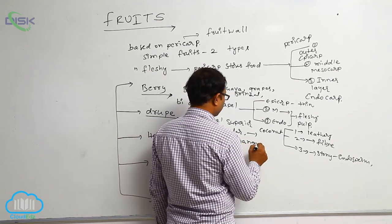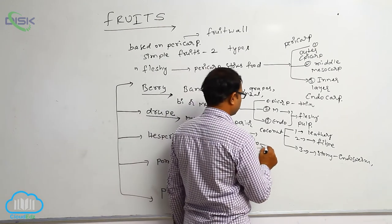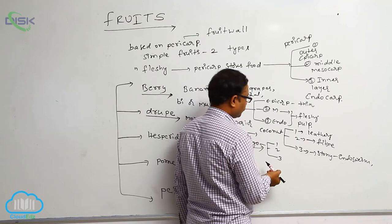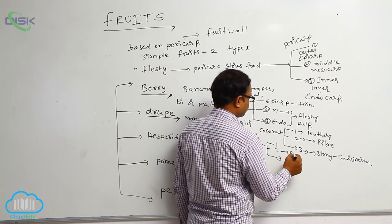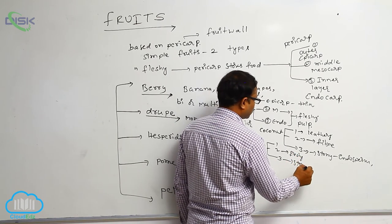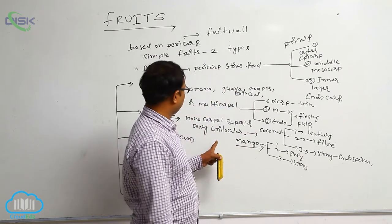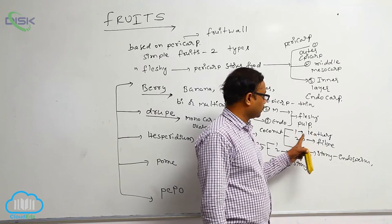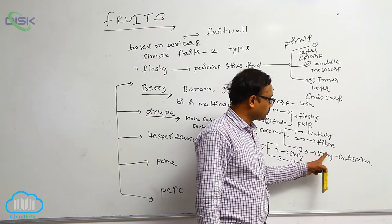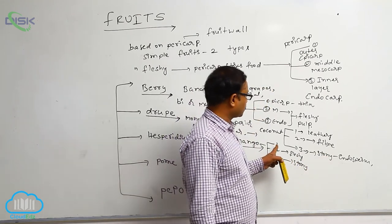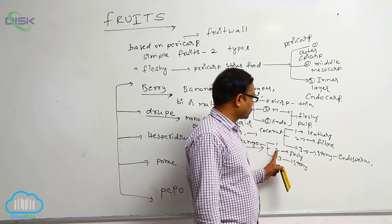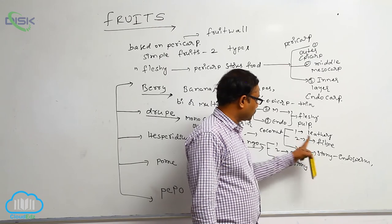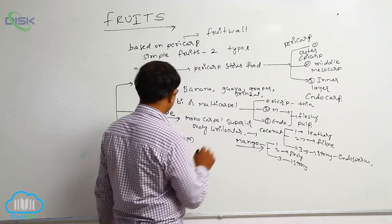Another drupe example is mango. It also has three layers: the first epicarp is a thin leathery layer, the middle mesocarp is fleshy, and the inner endocarp is stony. The key difference between coconut and mango: in coconut the middle mesocarp is fibrous, whereas in mango the mesocarp is fleshy. That is the important objective point known as drupe.